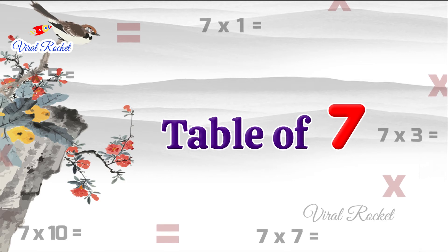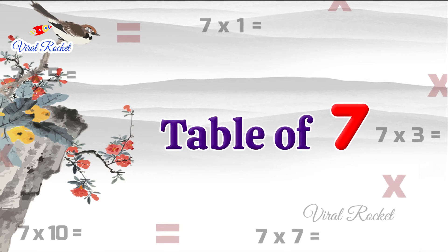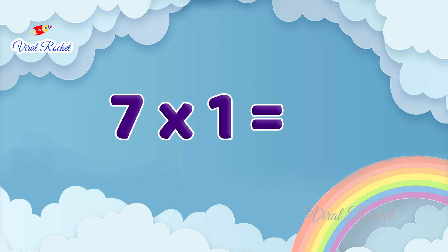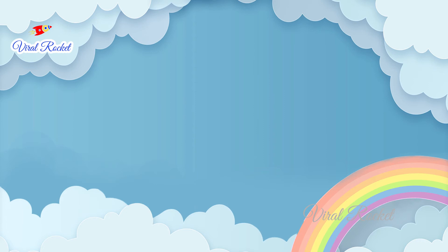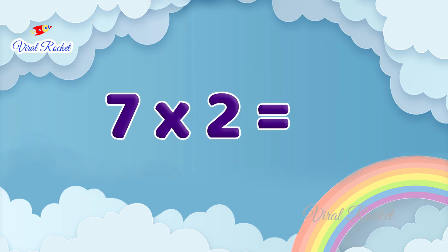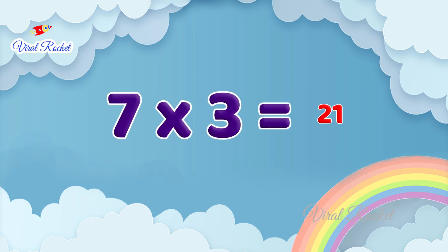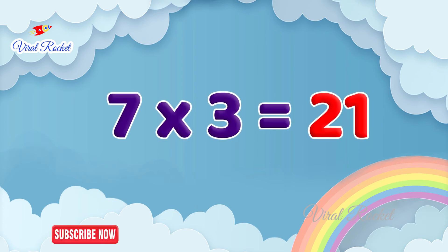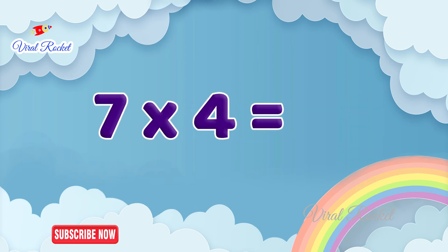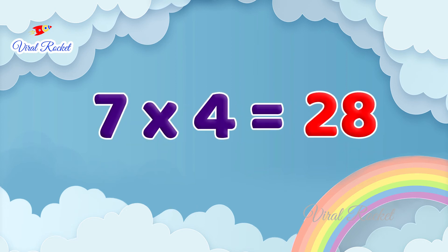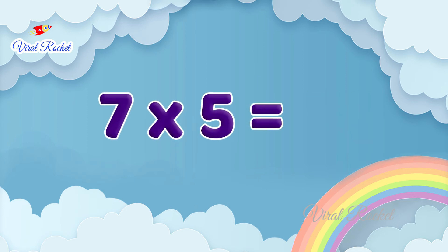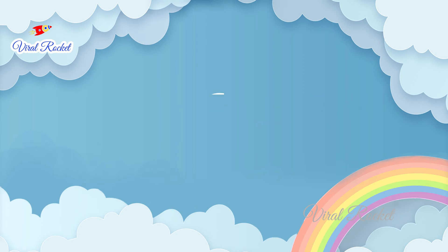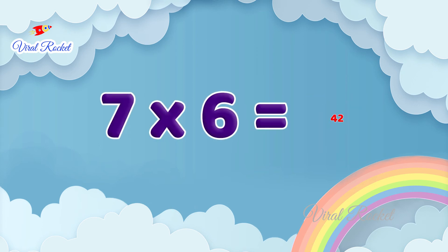We will learn the table of seven. Seven ones are seven. Seven twos are fourteen. Seven threes are twenty-one. Seven fours are twenty-eight. Seven fives are thirty-five. Seven sixes are forty-two.